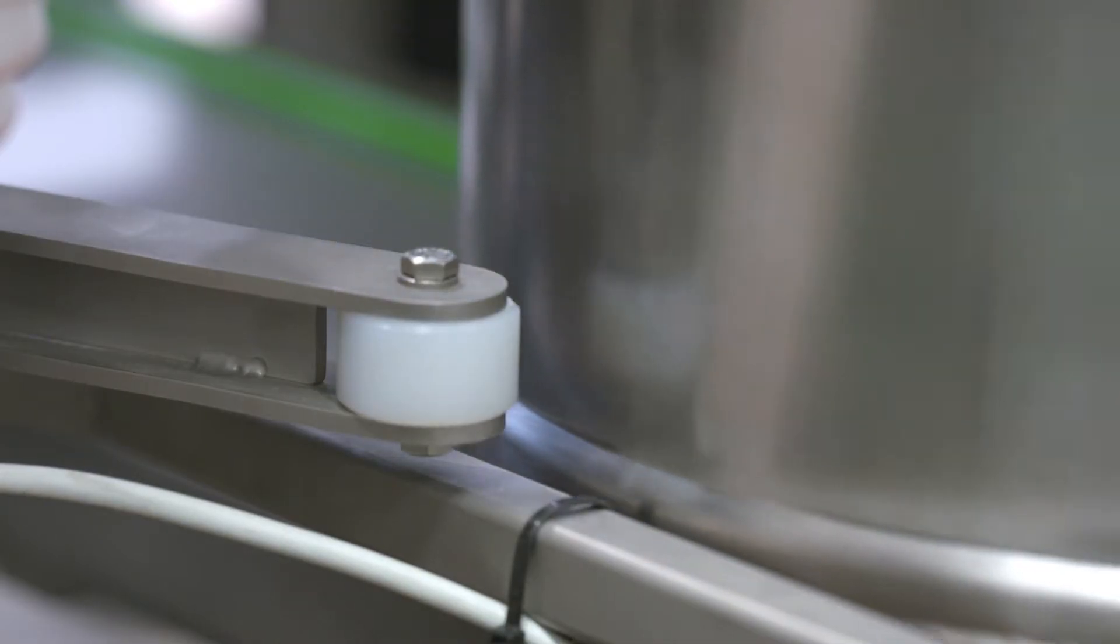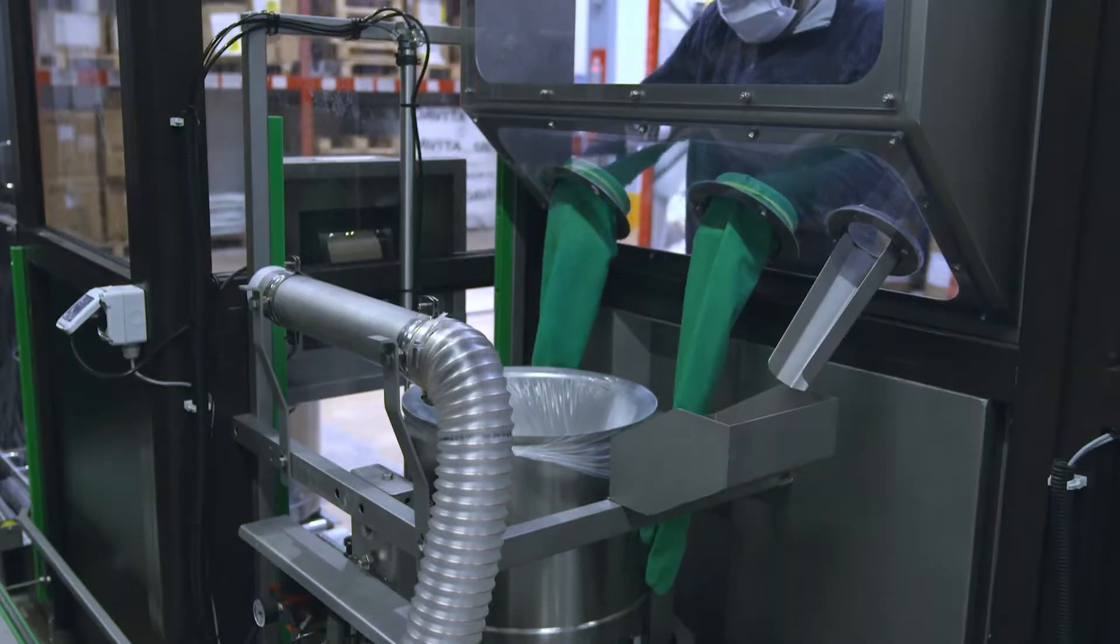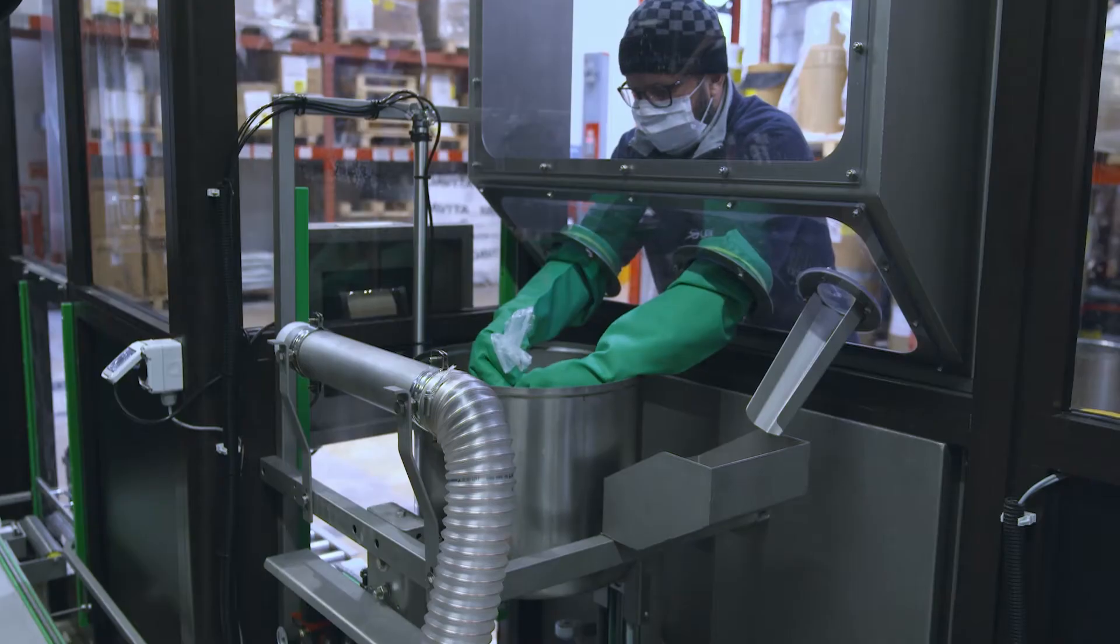At the end of the weighing cycle, the buckets with the recipes are unloaded into an exit roller conveyor.